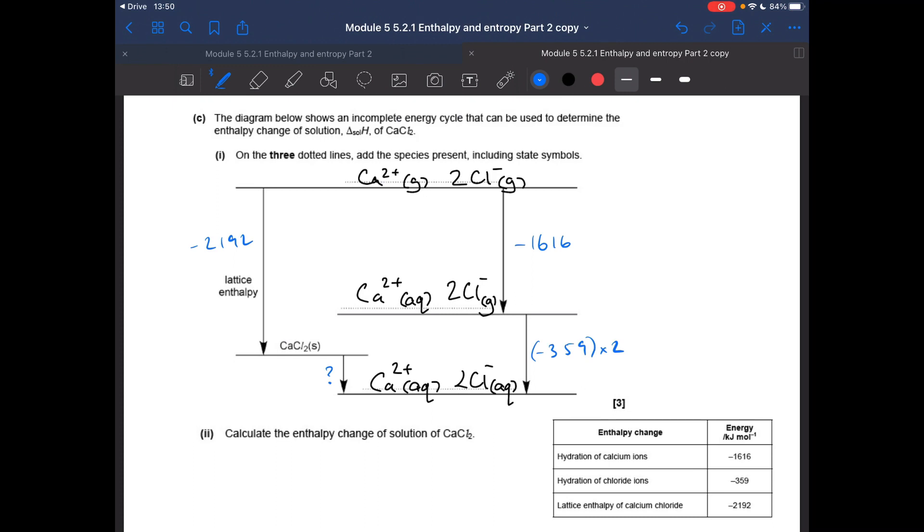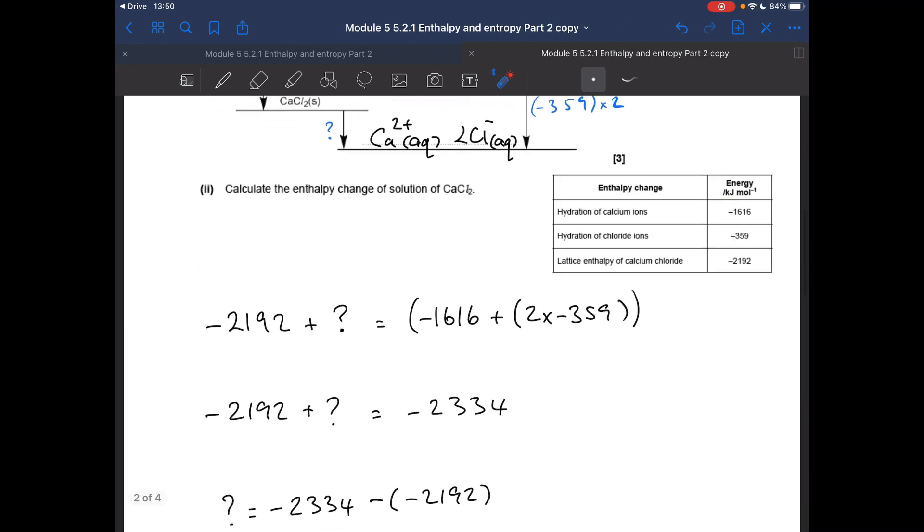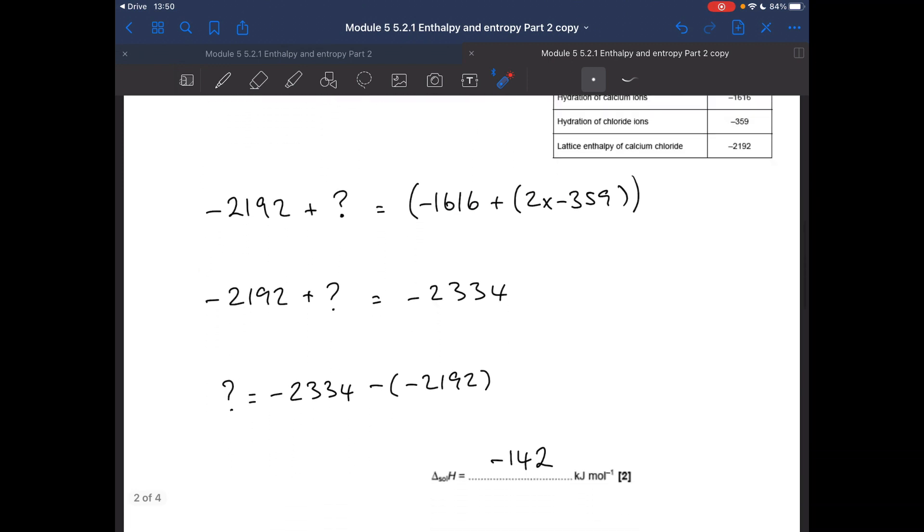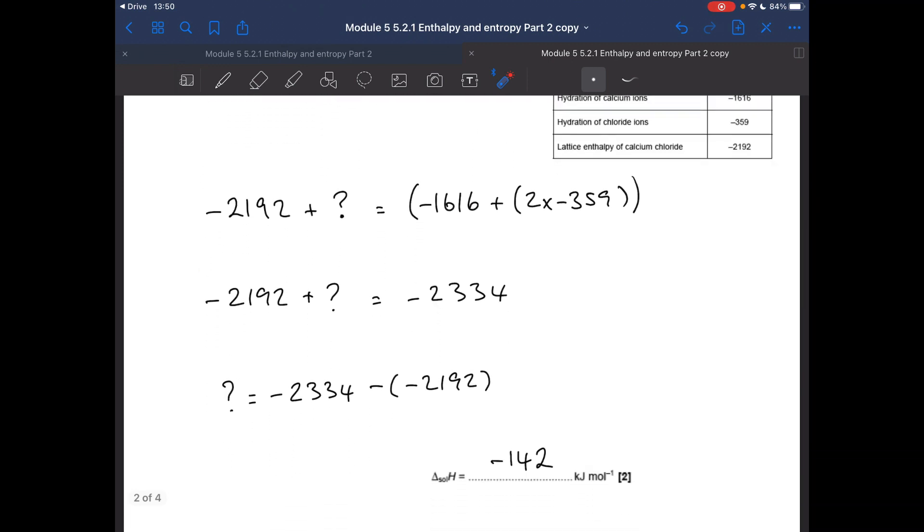And then just some basic Hess's law, so they equal those. So if we wanted to have that on its own, we would have the sum of those minus that one. So there's the numbers in there, and the answer was minus 142.